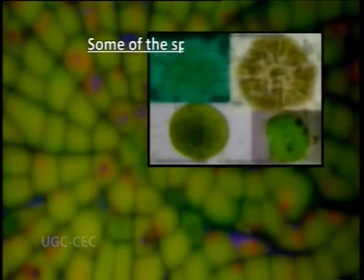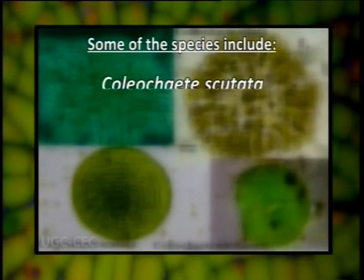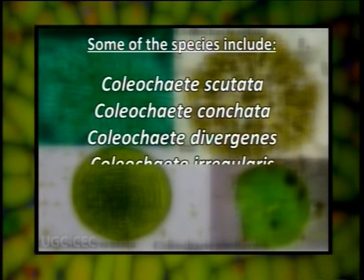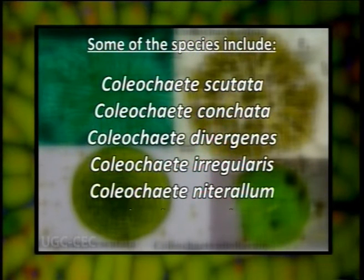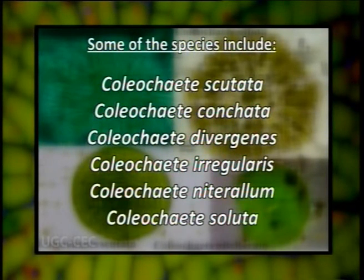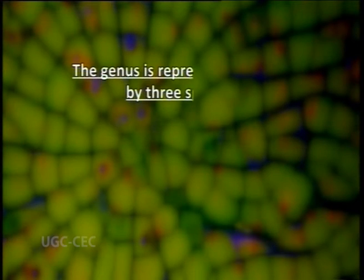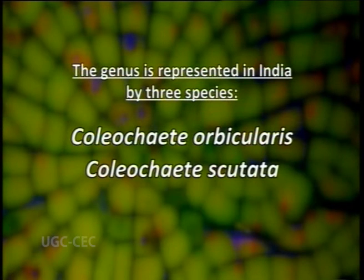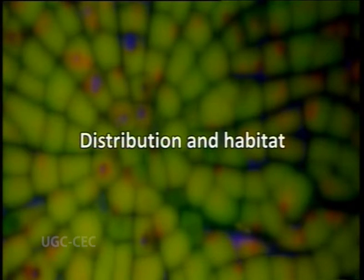Some of the species include Coleochaete scutata, Coleochaete contorta, Coleochaete divergens, Coleochaete irregularis, Coleochaete nitellarum, and Coleochaete soluta. The genus is represented in India by three species: Coleochaete orbicularis, Coleochaete scutata, and Coleochaete nitellarum.